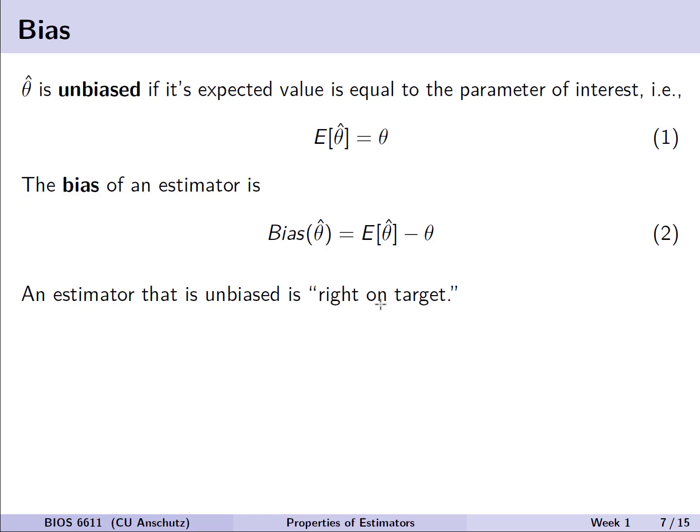The first property is a term we call bias. Theta hat, we say, is unbiased, our estimator, if its expected value is equal to the parameter of interest. In other words, we might write this mathematically as E of theta hat equals theta. And so there's a little bit of math and theory that goes behind this that we'll touch on in some other lectures, but we can note that if it has this property, we would say it's unbiased. Now, in practice, we can calculate the bias of an estimator by taking the difference of the expected value of theta hat minus that true population parameter. An estimator that is unbiased we could say is right on target, correctly identifying and estimating the quantity of interest.